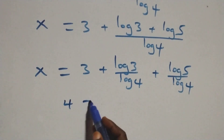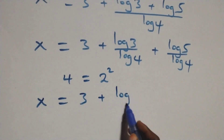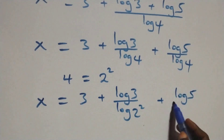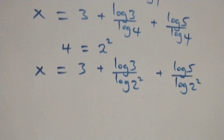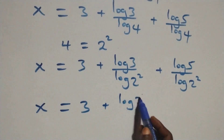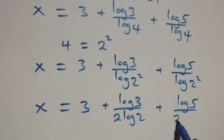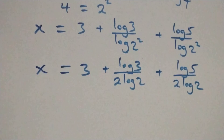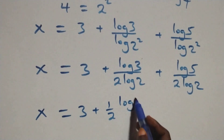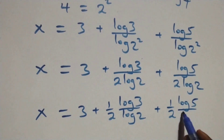Now, four can be written as two times two, that is two squared. So x equals three plus log three over log two squared plus log five over log two squared. Applying the power rule to the denominator: log two squared equals two log two. This becomes x equals three plus log three over two log two plus log five over two log two.